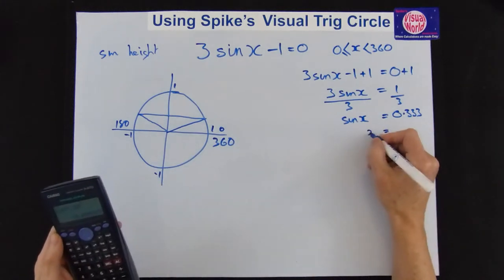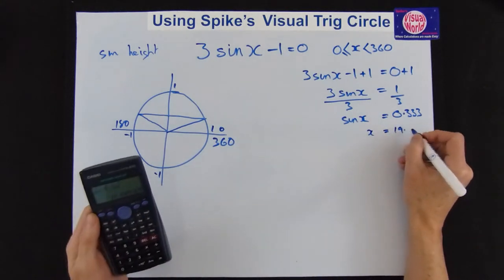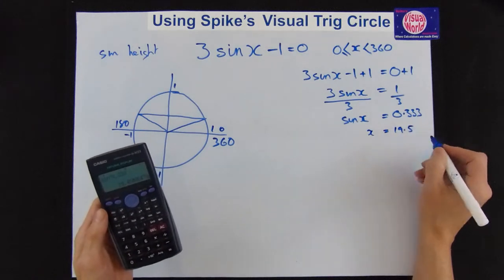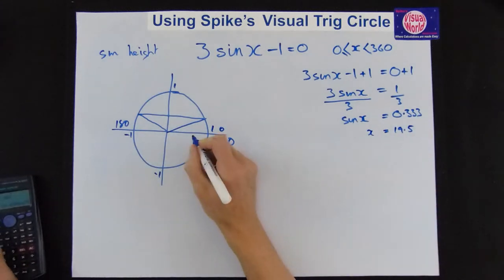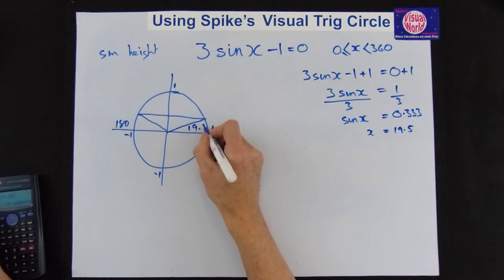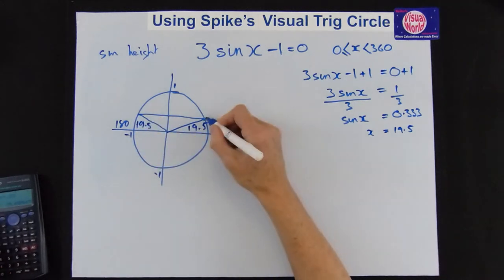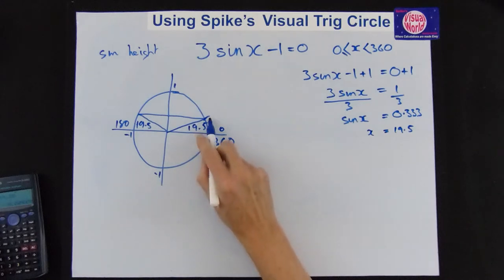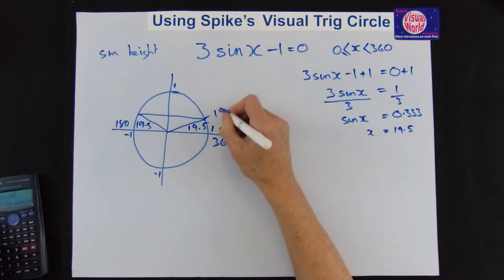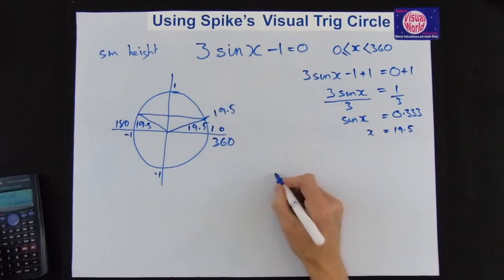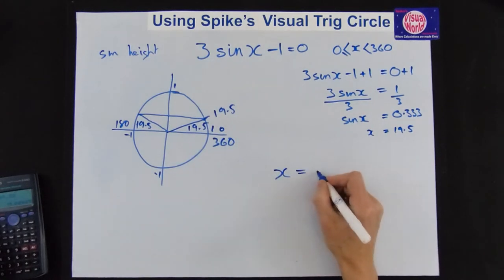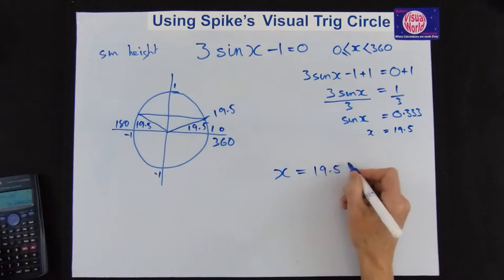And we get 19.5. So we put x equals 19.5. It's 19.45. Round it up to 19.5. So in there we have 19.5. So it's easy to find the first one this time because it's from nothing across 19.5. So the first answer is 19.5. So our first answer x equals 19.5 degrees.